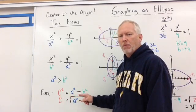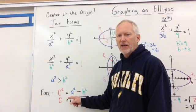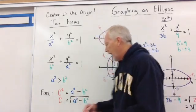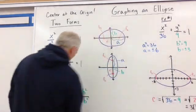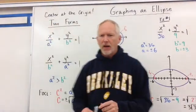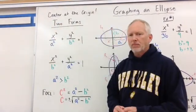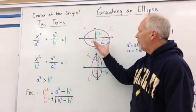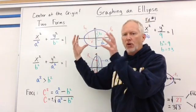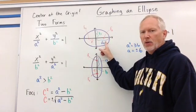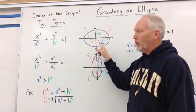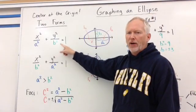If the a squared, or the larger number, is under the Y category, then it will elongate in the Y direction. We also have some focal points to find. The foci: c² equals a² minus b². So it will always be the bigger number minus the smaller number. If we want the value of c, we take the square root of a² minus b², and it's going to be the plus or minus value.